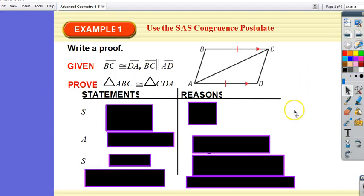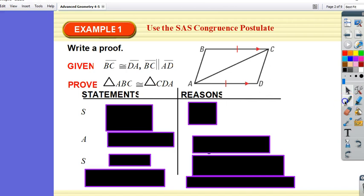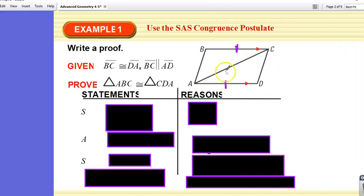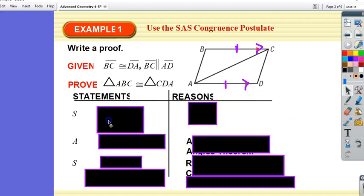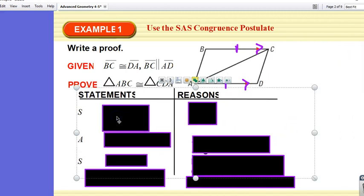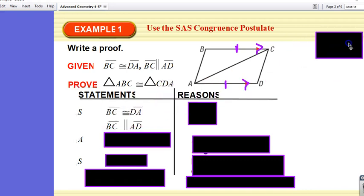Alright, so use the Side-Angle-Side Congruence Postulate. On this one, they gave us that BC is congruent to DA, so let's mark that. BC is congruent to DA. Then they said that BC is parallel to AD. So this is what they told us so far. So those are our statements.